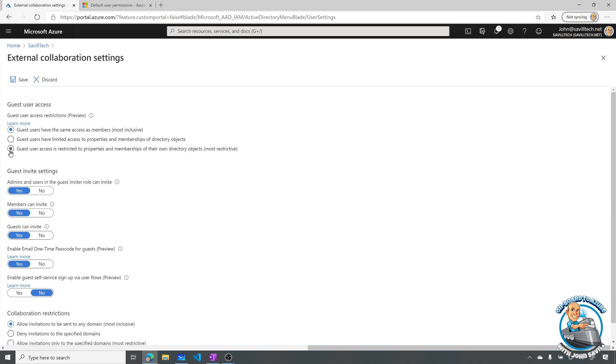But now I have this other option. User access is restricted to properties and memberships of their directory objects. Now even if I know the UPN. I cannot go and look at that object. I cannot look at membership of groups. I can completely lock it down. Now things like SharePoint and Teams will still work. They have their own sets of controls. Other applications. You're going to want to test. And really make sure it's not breaking them.